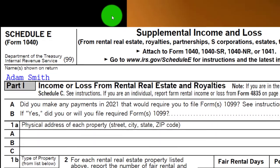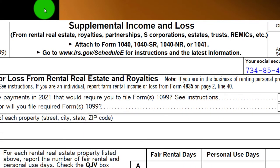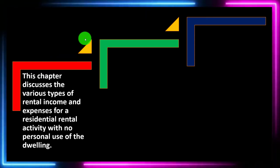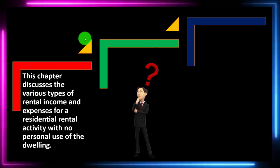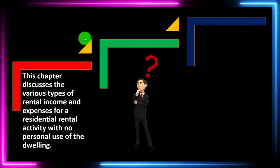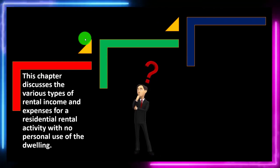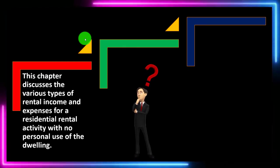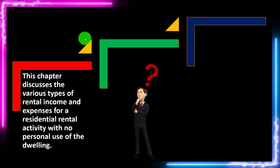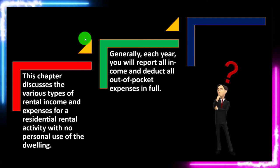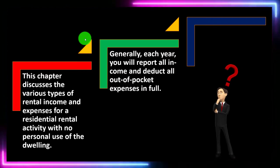This is Schedule E, the Supplemental Income and Loss — we're focusing on rental real estate. This is basically like an income statement. This chapter discusses the various types of rental income and expenses for a residential rental activity with no personal use of the dwelling, so we're talking full rental use in this section.